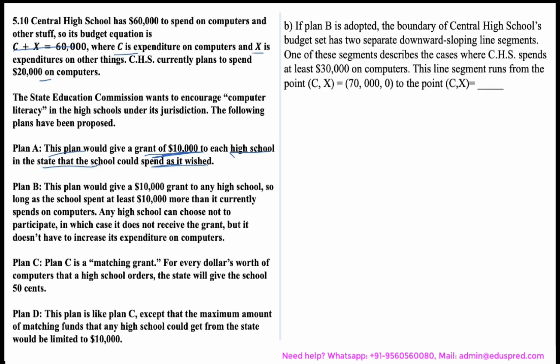If Plan B is adopted, Central High School's budget set has two separate downward-sloping line segments. One segment describes the case where CHS spends at least $30,000 on computers. This segment runs from the point (70,000, 0) to another point we need to find. Under Plan B, the $10,000 grant is given as long as the school spends at least $10,000 more than it currently spends on computers. Any school can choose not to participate.